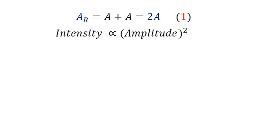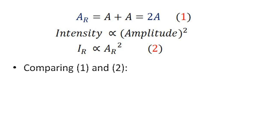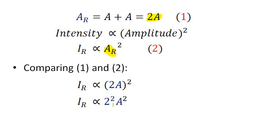From fundamentals, we know intensity is proportional to the square of the amplitude, or we can write IR is proportional to AR squared — let this be equation 2. Comparing equations 1 and 2, we can substitute 2A in place of AR. That is, IR is proportional to (2A)² or IR is proportional to 4A².